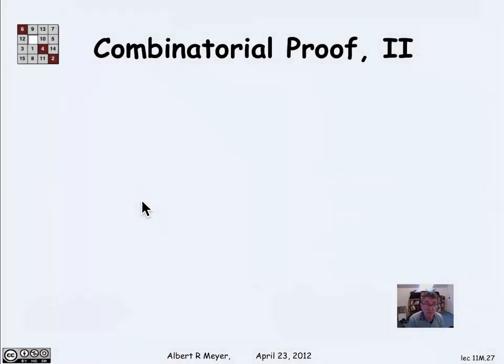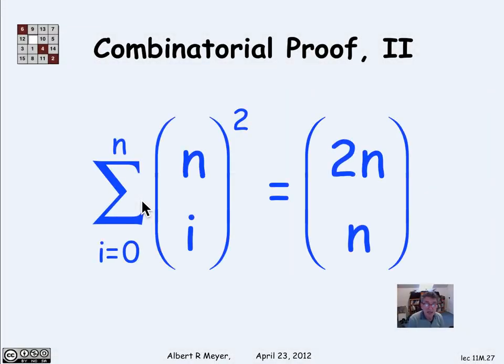Let's look at one more example. Here is an obscure looking identity that actually also turns out to be of use. But let's not go into that now. Let's just take it as this pure algebraic fact about binomial coefficients. 2n choose n is equal to the sum from i equals 0 to n of the square of n choose i.